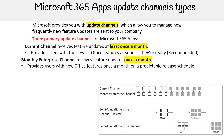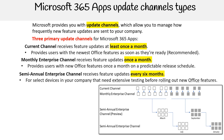The next update channel is Monthly Enterprise Channel, which receives feature updates once a month. This monthly update can include feature, security, and non-security updates. This provides users with new Office features once a month on a predictable release schedule.